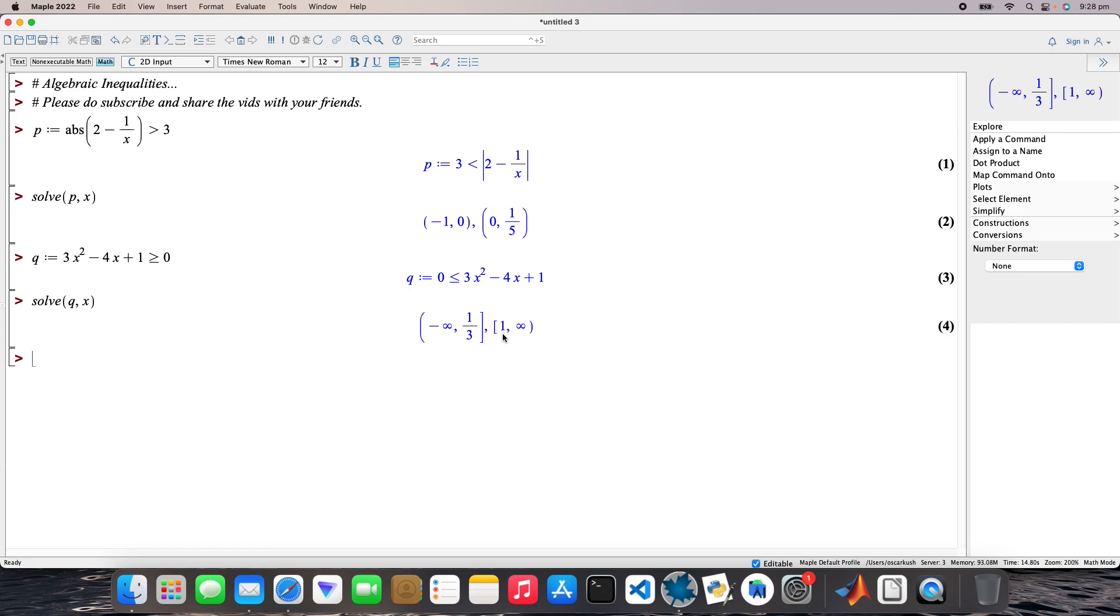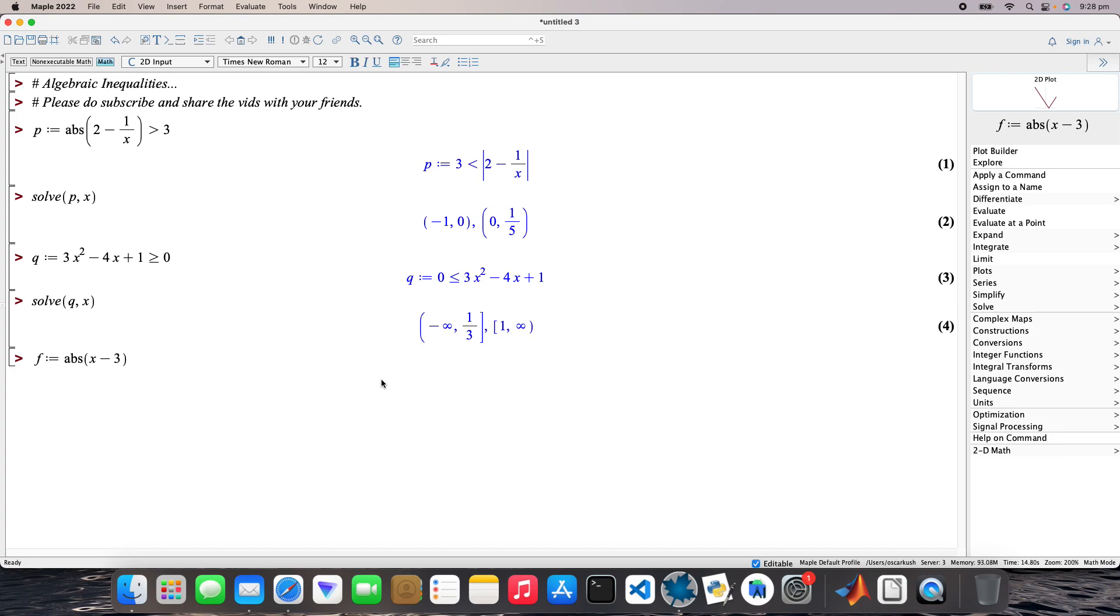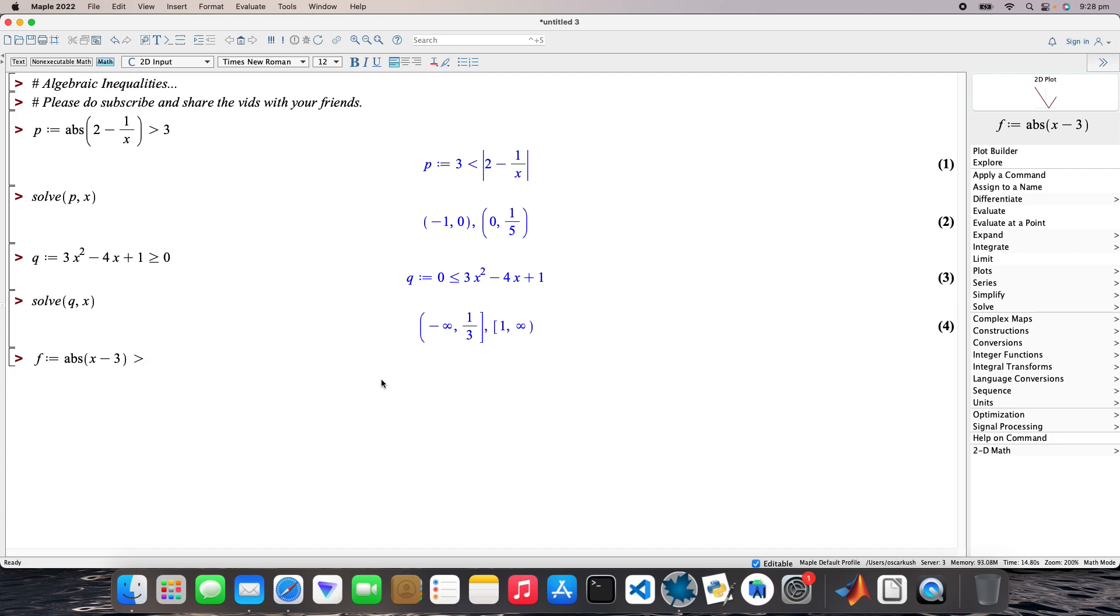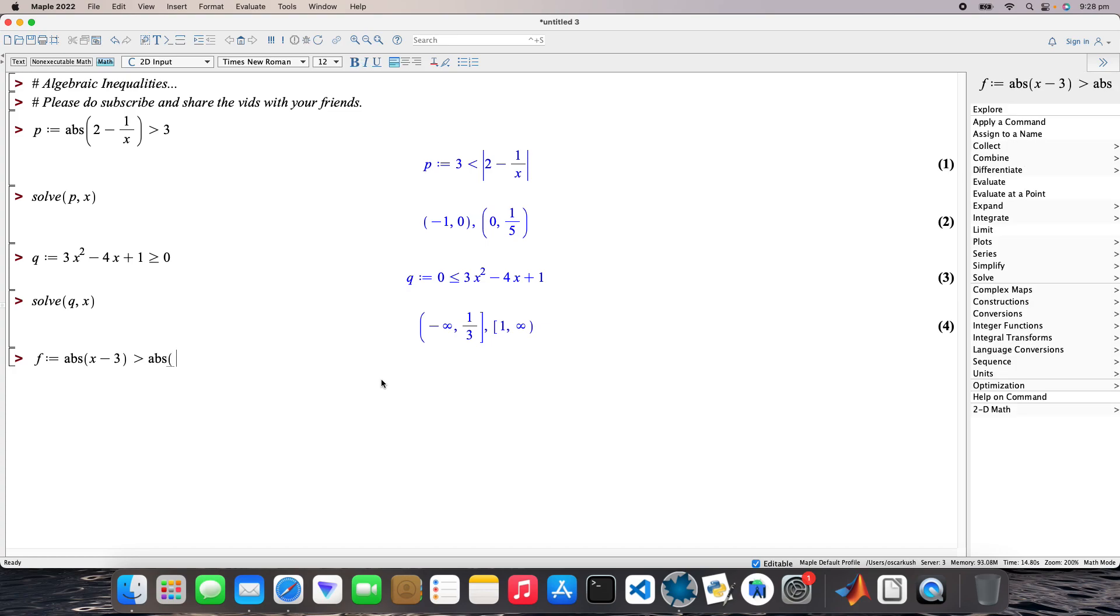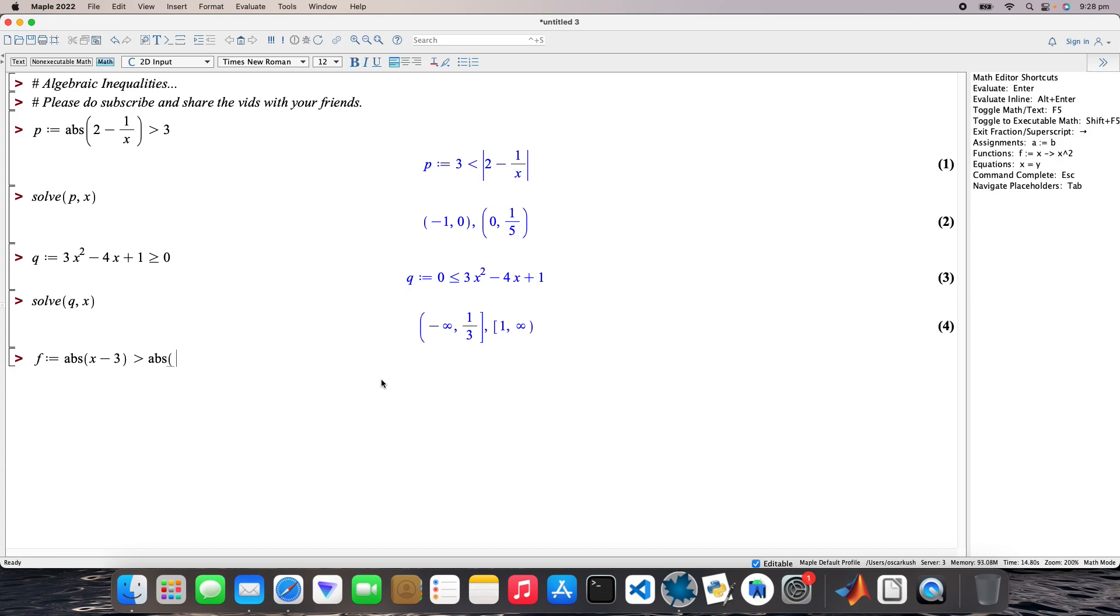Let's click on another one. I've got another one, so I'll just call that f. Absolute value of x minus 3 is greater than absolute value of x plus 4.